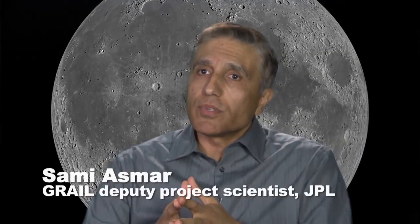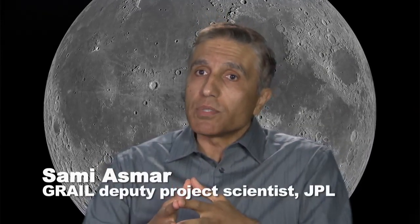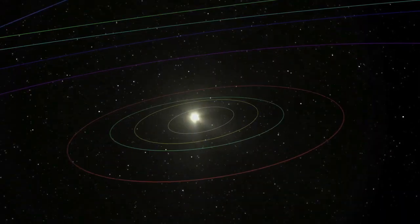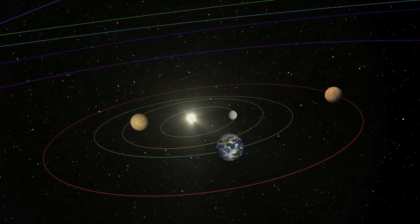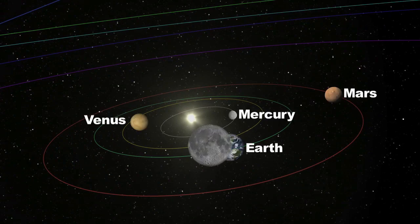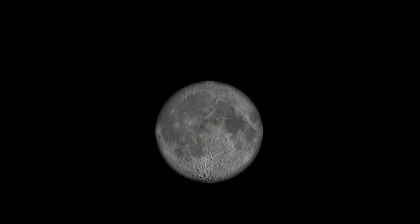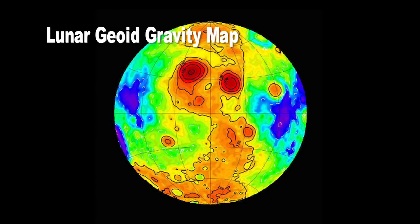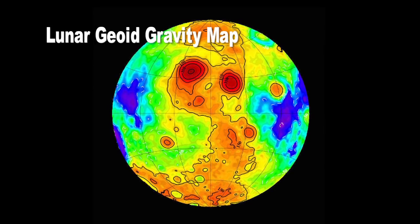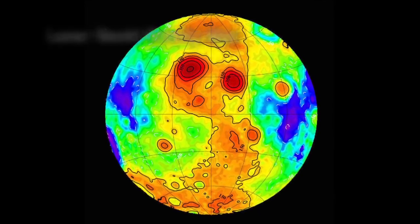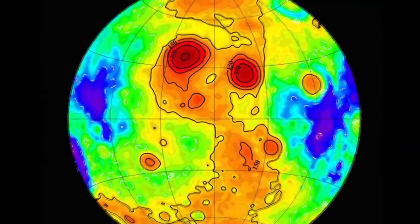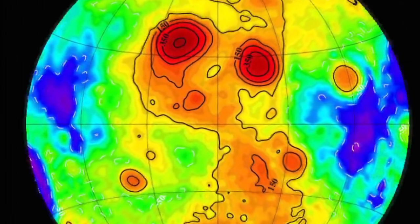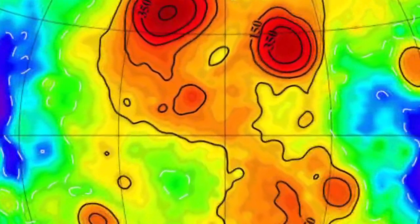Understanding how the Moon has developed would really help us in understanding how the other planets in the inner part of the solar system, the rocky planets, have also developed. The purpose of the GRAIL mission is to investigate the interior structure of the Moon. To achieve that, we have to measure the gravitational field of the Moon.